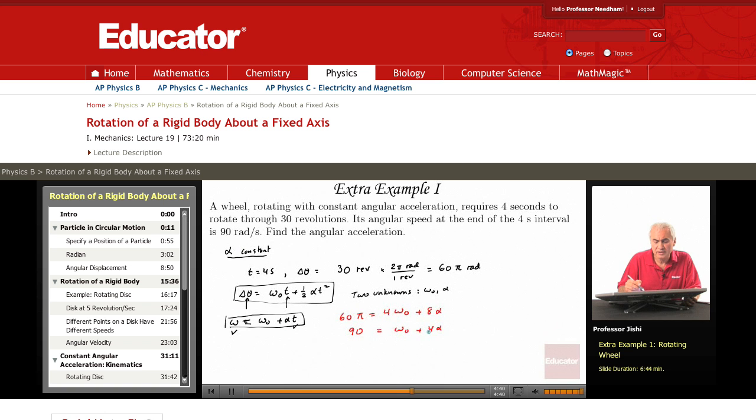I want to find alpha. So multiply this by 4. This becomes 360 equals 4 omega zero plus 16 alpha. Now subtract these two.